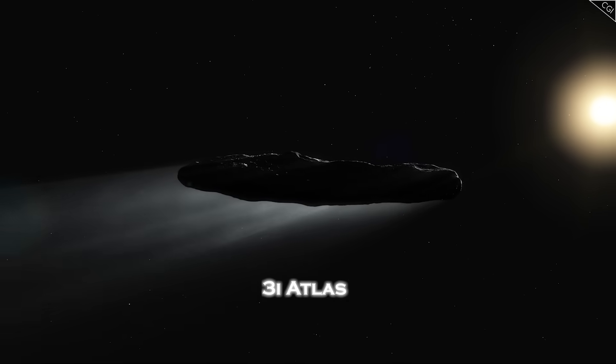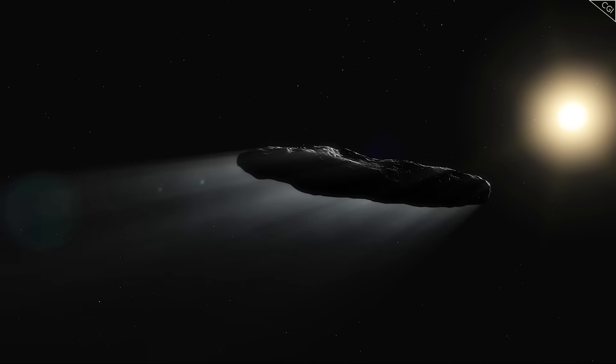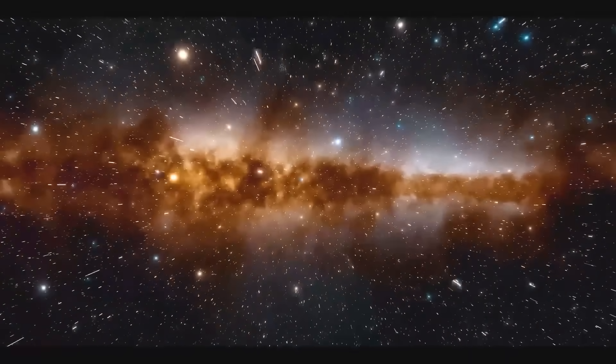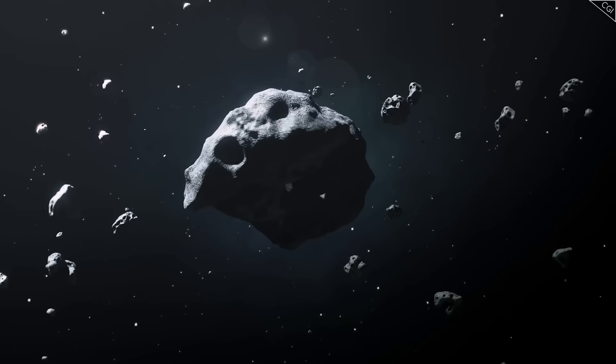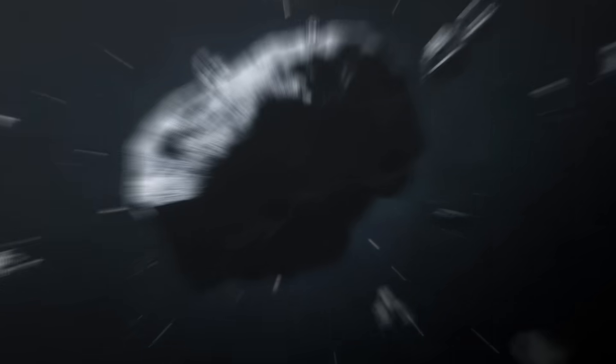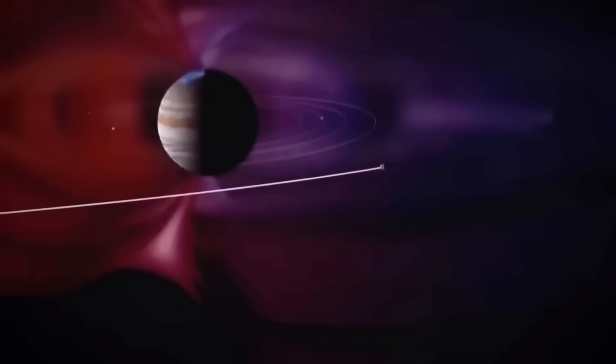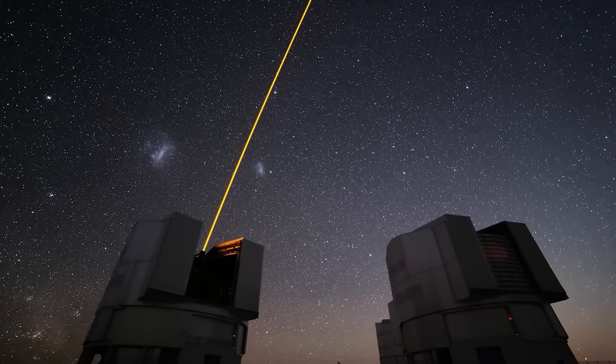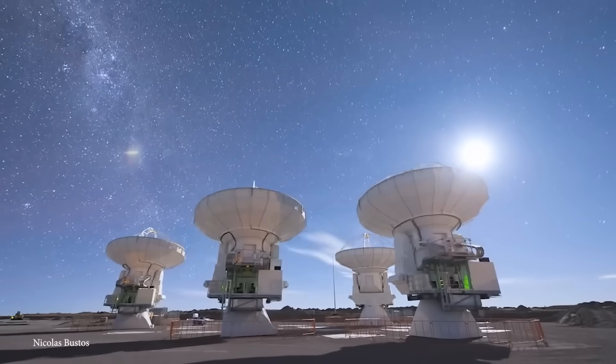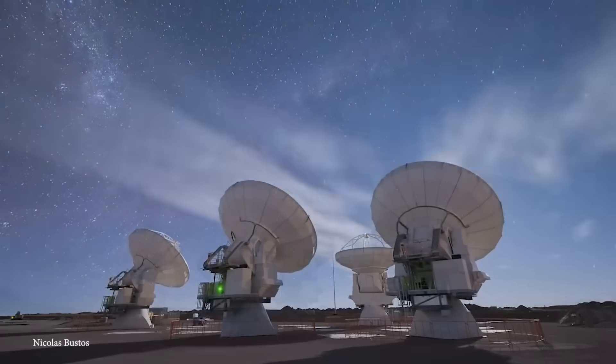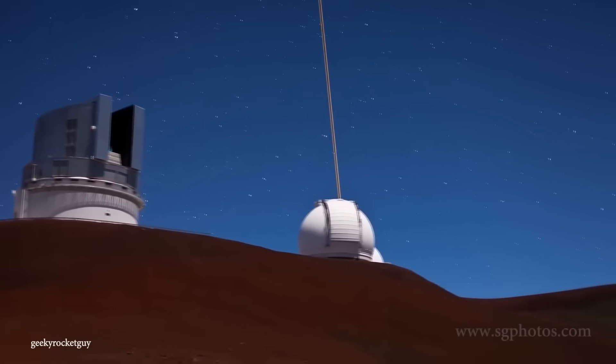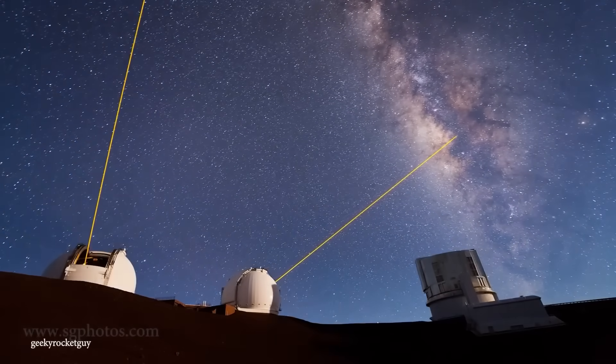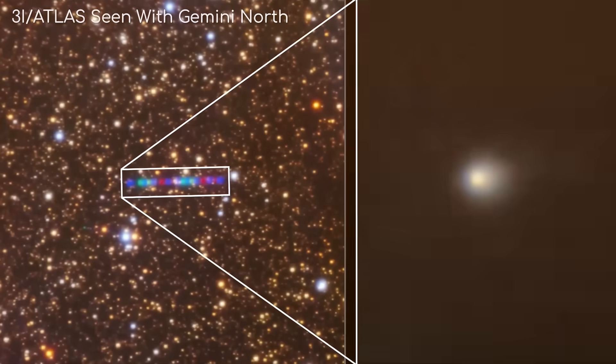When the faint object now known as 3I Atlas was first detected, astronomers expected nothing more than another silent traveler. A piece of cosmic debris drifting aimlessly through our solar system. But then, without warning, something happened that no one was prepared for. Across the planet, from the Very Large Array in New Mexico to the Atacama Desert Observatory in Chile, and even as far as the Square Kilometer Array in South Africa, radio telescopes began to register the same impossible event. A signal.